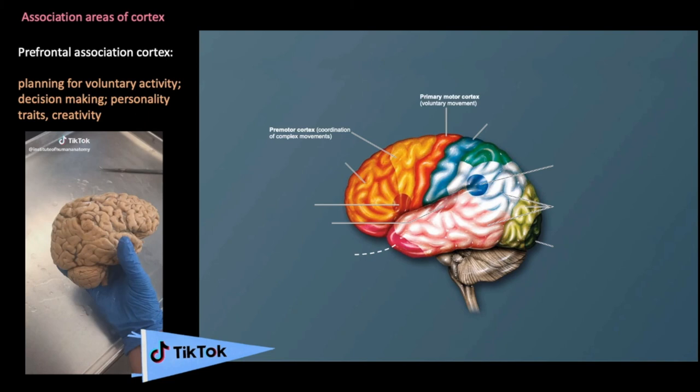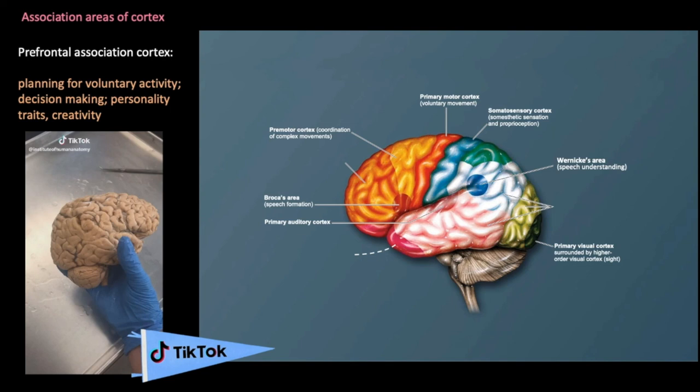The motor, sensory, and language areas we just discussed take up one half of the cerebral cortex. The remainder is dedicated to association areas, which are related to higher function — conscious mental activity such as thinking, remembering, and the human ability to reason. The first is the prefrontal association cortex, just anterior to the premotor cortex, associated with thinking and brainstorming and allowing us to weigh consequences of future actions.